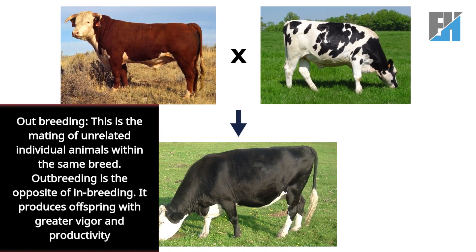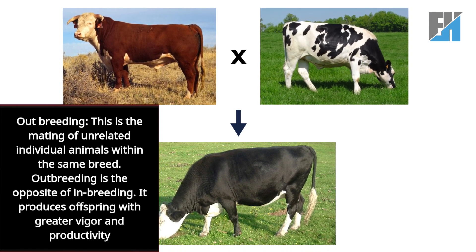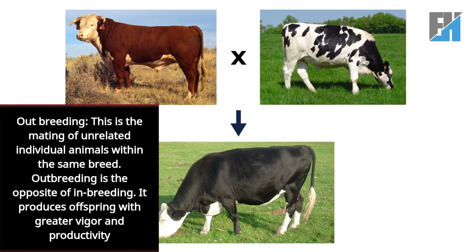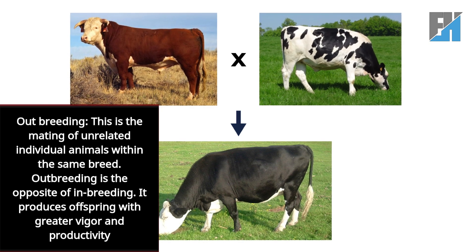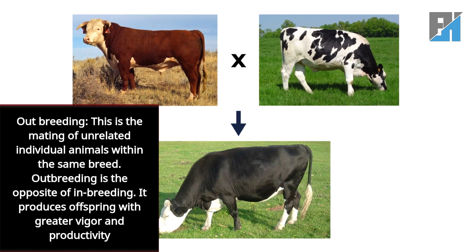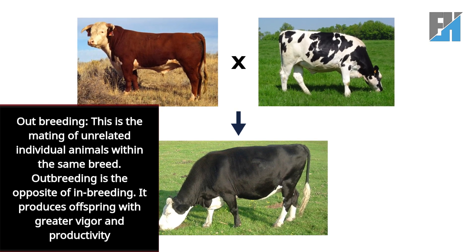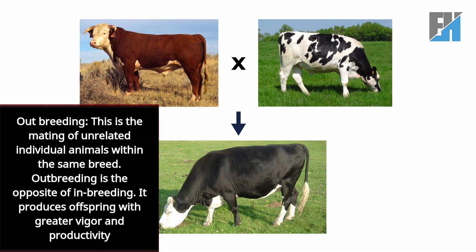Outbreeding is the mating of unrelated individual animals within the same breed. Outbreeding is the opposite of inbreeding, and it produces offspring with greater vigor and productivity.